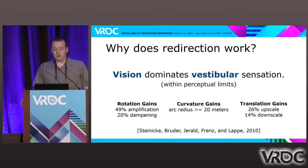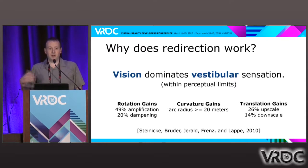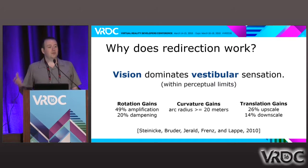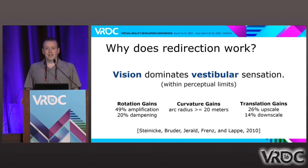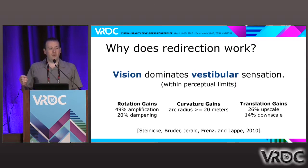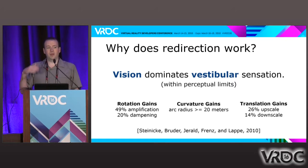A few researchers have studied this and come up with numbers, done back in 2010. It would be really interesting now with consumer VR technology to retest and see what these numbers are because they might vary from system to system. The overall idea is: as long as we apply these manipulations the right way, they won't be noticeable. When I talk about noticeability, I'm talking about perceptual noticeability — this is a property of how the brain works and it isn't conscious, it's subconscious.